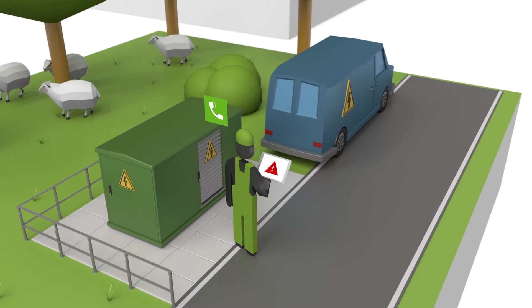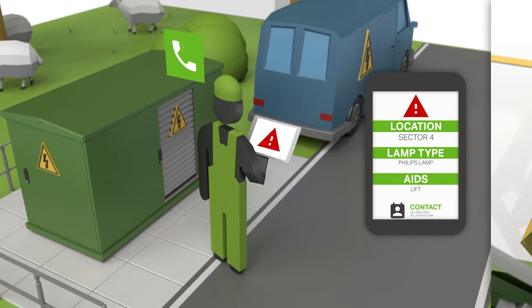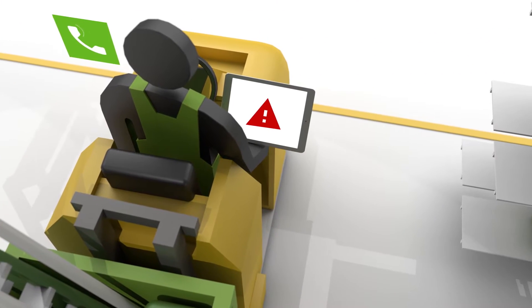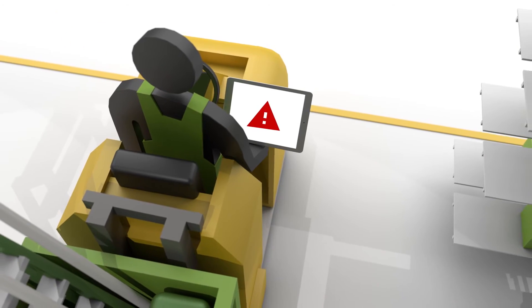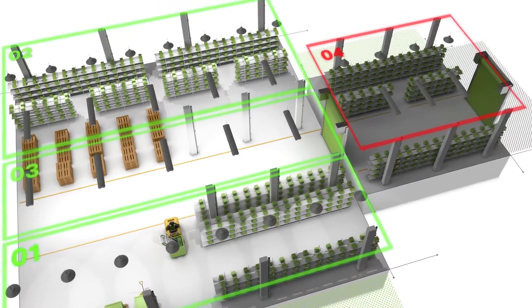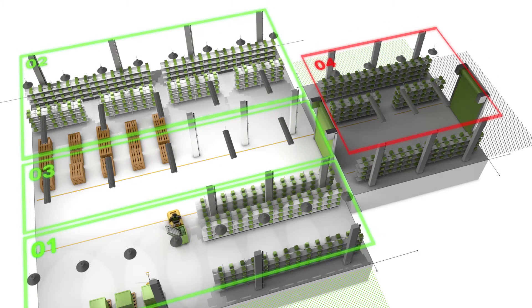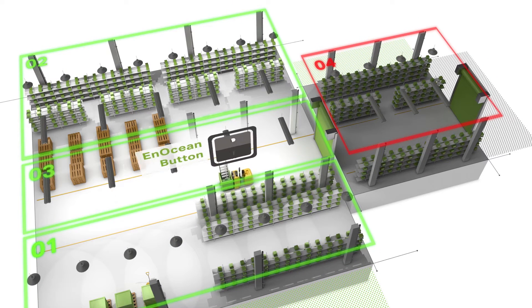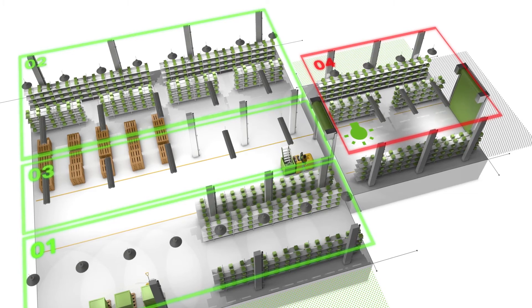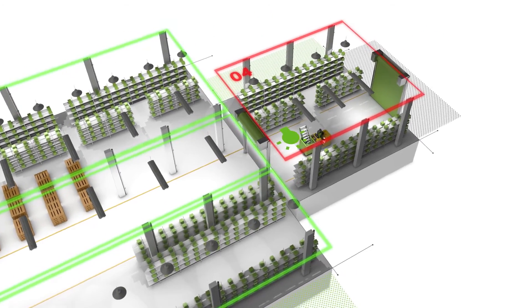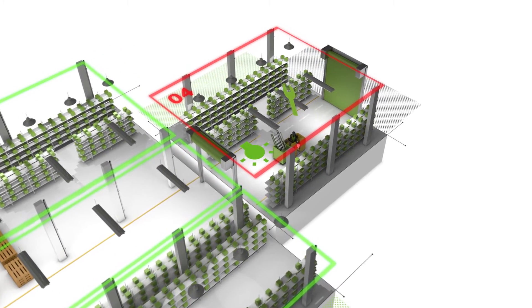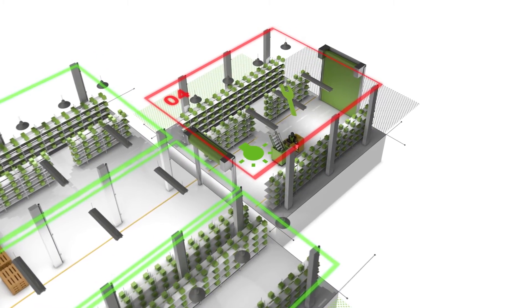If, for example, a lamp fails, the system displays a detailed error diagnosis. This tells you which lamp, the exact type, location, and at what height is defective and what you need for it. This means that you can perform maintenance and repairs yourself at any time of day or at night — not only saving time, but also the costs for a specialist.